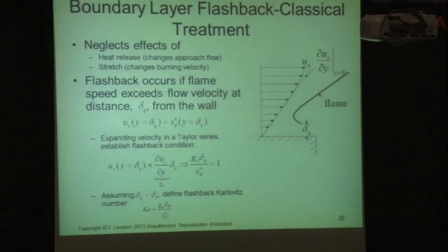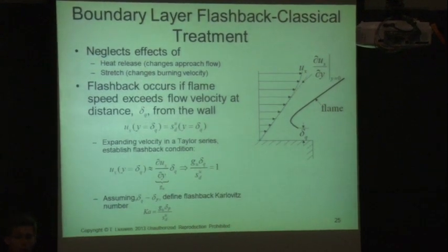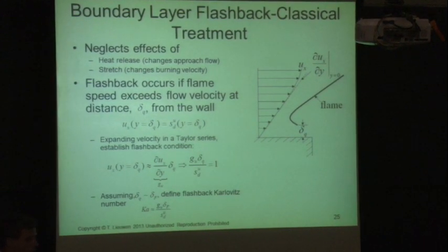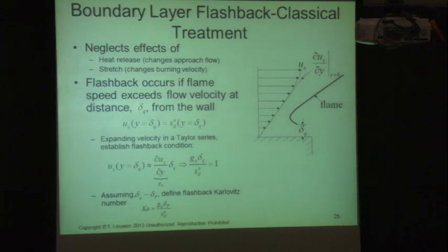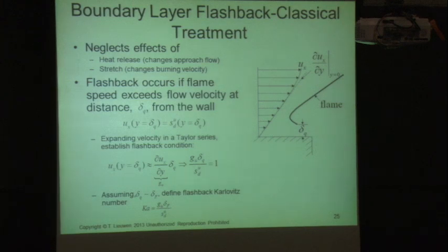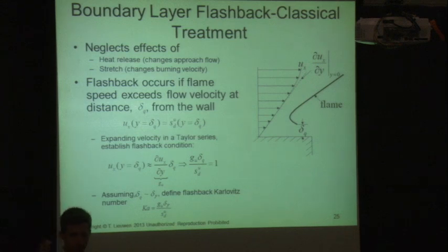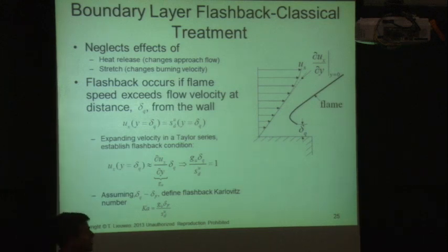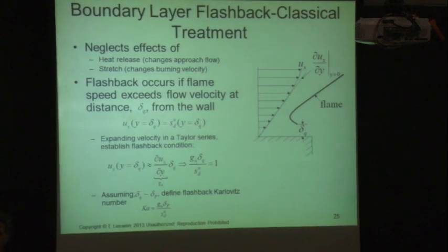Let's start with boundary layer flashback — the classical treatment, which is essentially a non-stretched, isothermal analysis. We neglect the effect of heat release and assume we know the flow field — we assume a velocity profile with some critical gradient. We also assume the burning velocity is a given, not a function of the flow field or flame curvature.